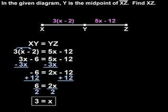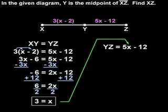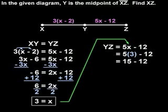Now to find the length of segment XZ, let's first find the length of segment YZ which is 5x minus 12. Since 3 equals x, we can plug a 3 in for x to get 5 times 3 minus 12, or 15 minus 12 which is 3.